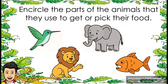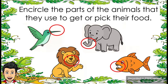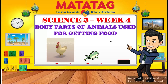Circle the part of the animal that they use to get or feed their food. For the first animal, a bird, they use their beak. The second animal, elephant, they use their trunk. The third animal, lion, they use their mouth. And last, fish, they use their mouth to eat. Good job, kids.